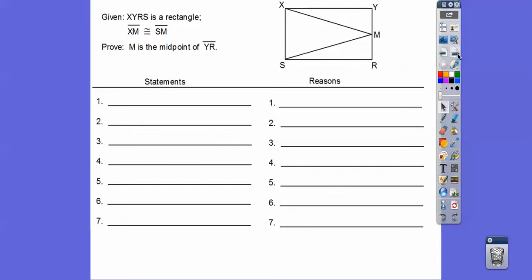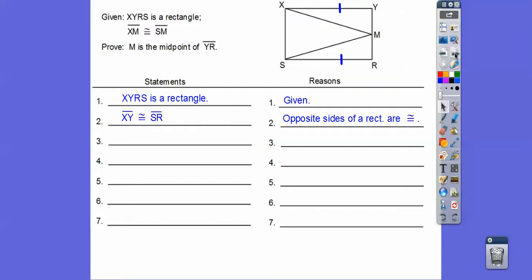Let's go ahead and throw the given down. Now, sometimes we'll use more than seven steps, sometimes fewer. But we try to give you enough lines to complete this proof. So we've got a rectangle, and because it's a rectangle, I'm going to say the opposite sides are congruent — this top piece equals this bottom piece. Opposite sides of a rectangle are congruent. Always mark the figures when you're getting things congruent.